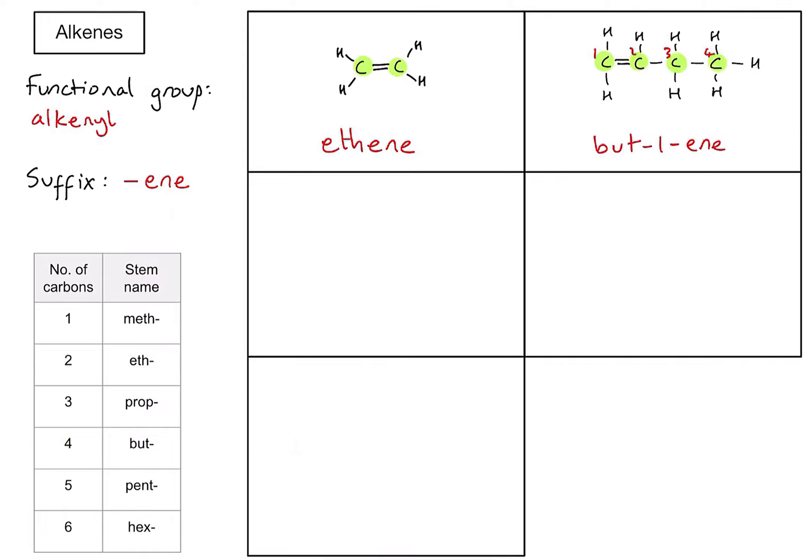Let's take a third example. Same process. We've got 1, 2, 3, 4 carbons. Yeah, it's still bute. So we're going to put our stem name in there. However, this time, again, I'm going to label my carbons. This time, the double bond begins on the second carbon. So unlike the previous example, this is going to be but-2-ene.